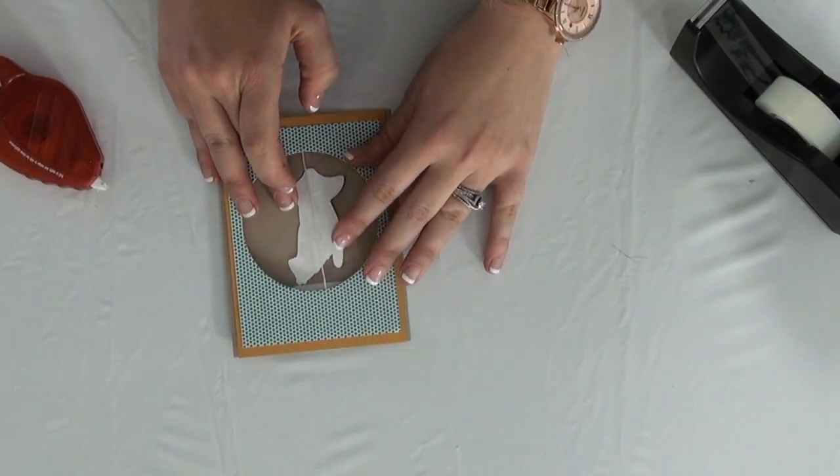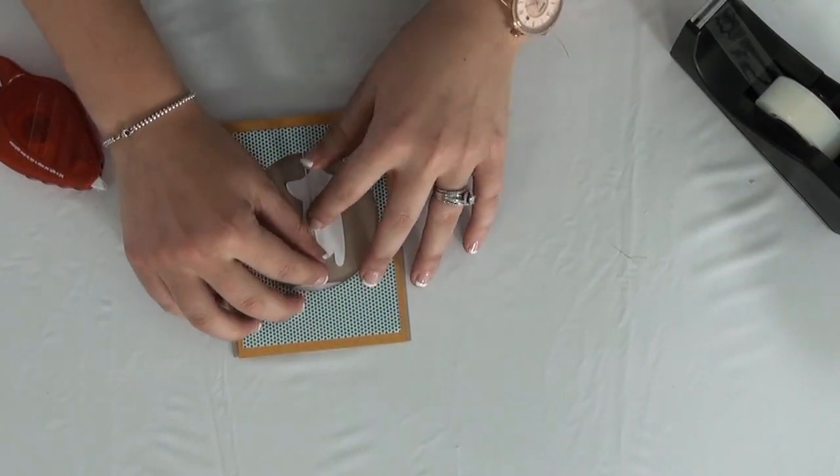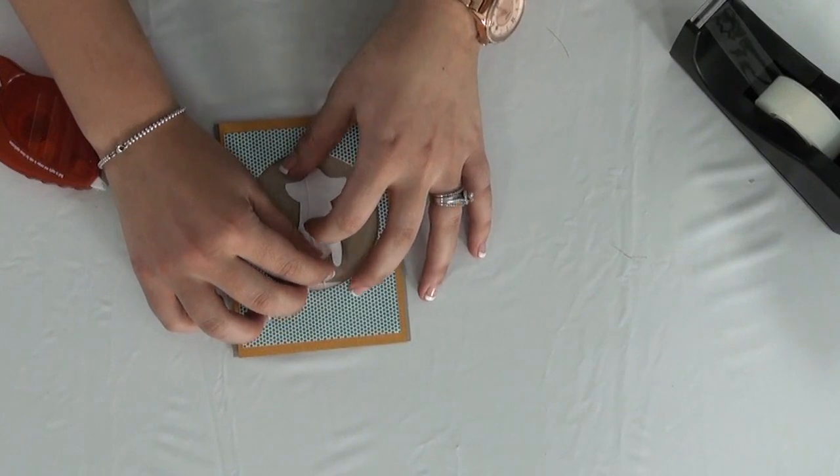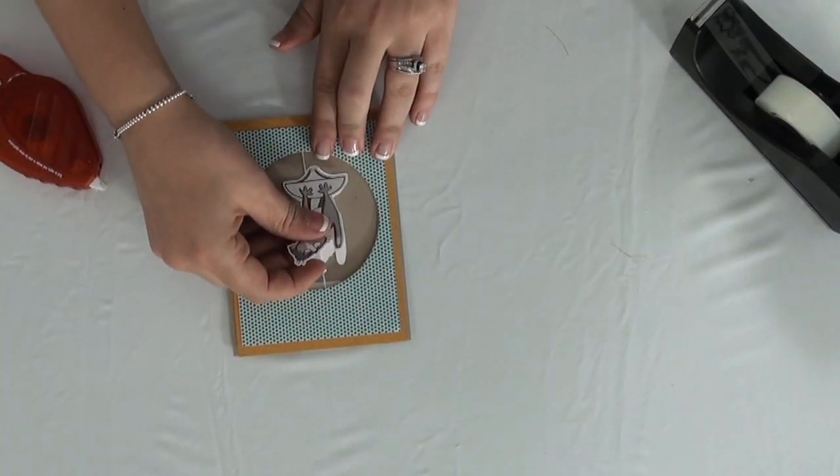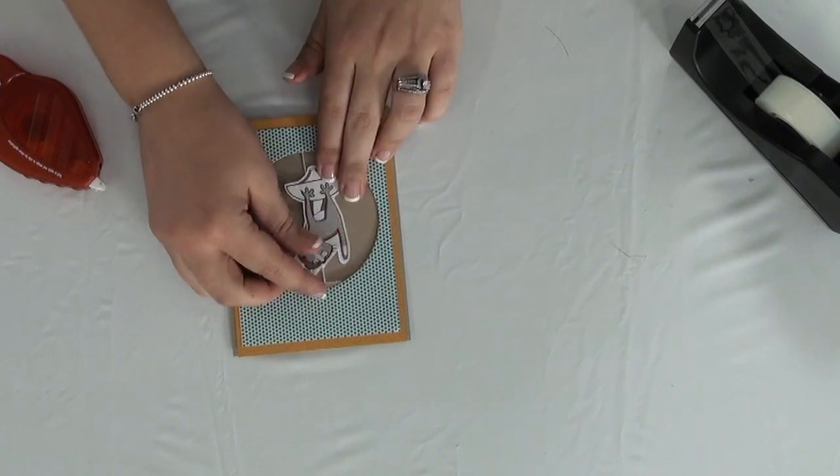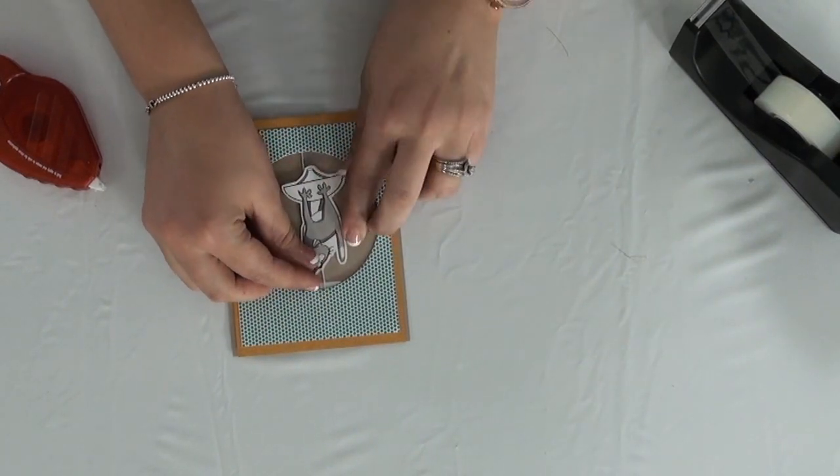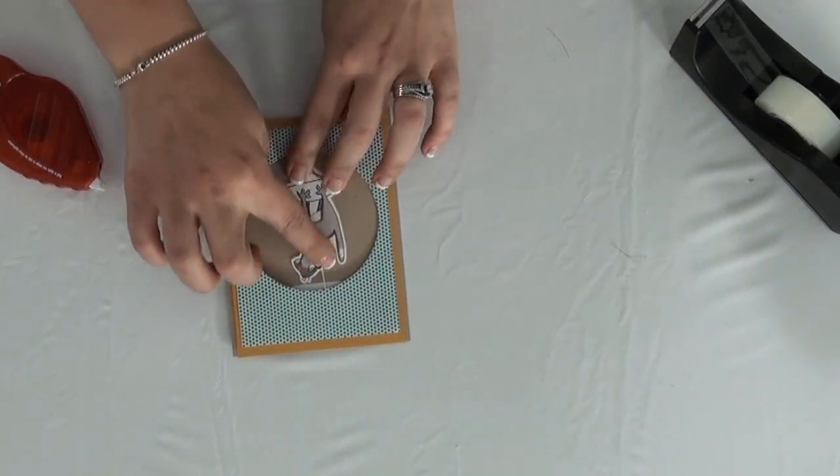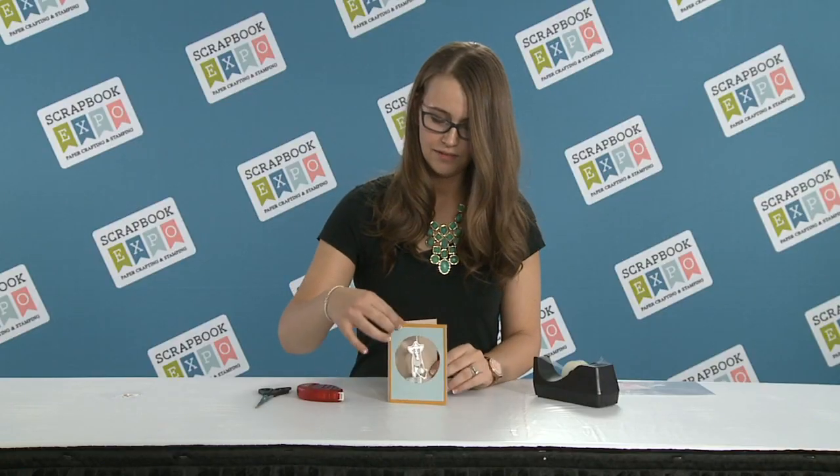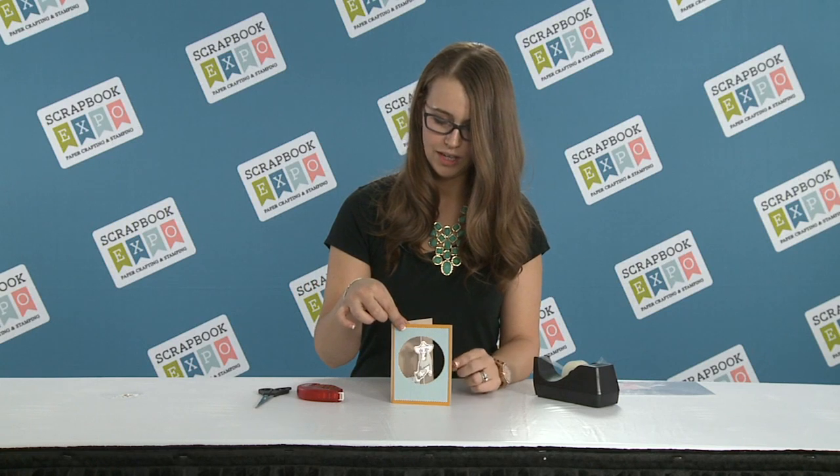So I set my image down where I'd like it and put it behind the string where I would like it to line up. Then I just take my other image and I put it right over the top. You can kind of adjust it, play with it as you'd like. And that way you have a floating image for your card.